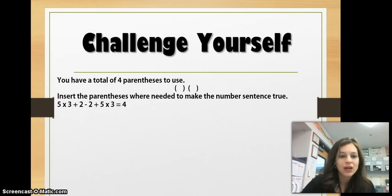All right, now I want you to challenge yourself. You have a total of four parentheses to use. Insert the parentheses where needed to make the number sentence true. So, this goes back to our work with the associative property and the distributive property. Knowing that what you do in parentheses, you want to do first. Think if you could organize these parentheses in a way that would make the number sentence true. We want 5 times 3 plus 2 minus 2 plus 5 times 3 and we want all that to equal 4. Come back to class with your answer and good luck. Look forward to seeing you then.